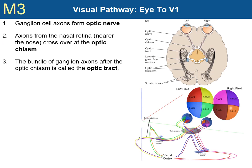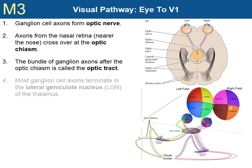After the optic chiasm, the reorganized collection of ganglion fibers is called the optic tract. The optic tract runs to the lateral geniculate nucleus of the thalamus, or LGN for short. As we will see, every sensory system except for smell transmits to the thalamus. Here is where the ganglion axons, which began in the retina of the eye, finally terminate. They synapse on neurons of the LGN.